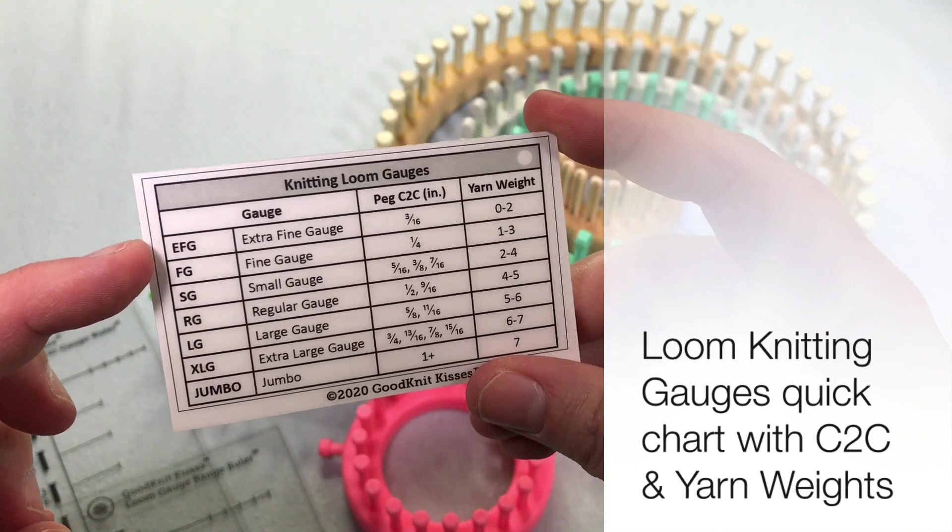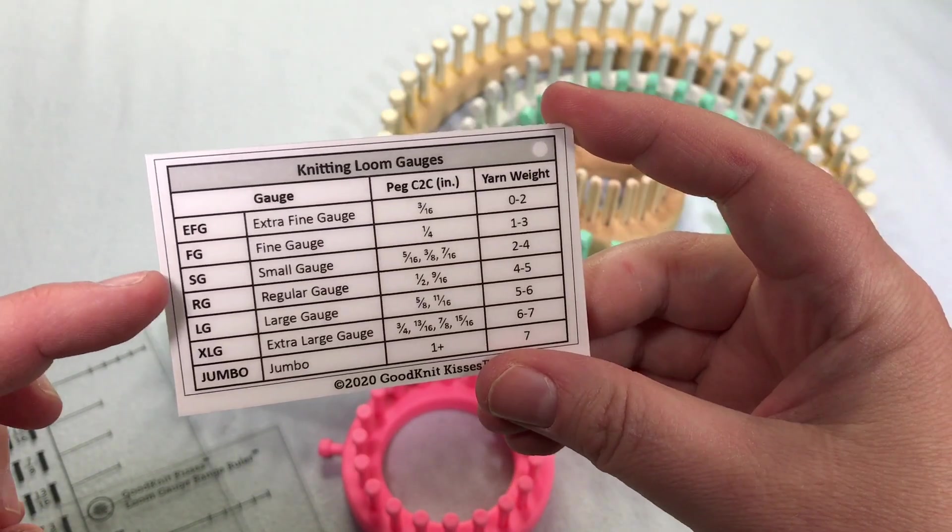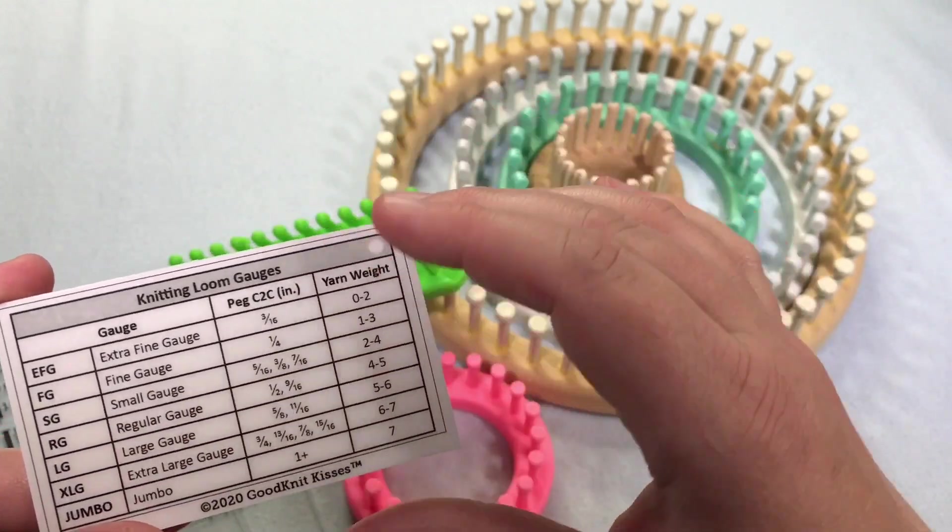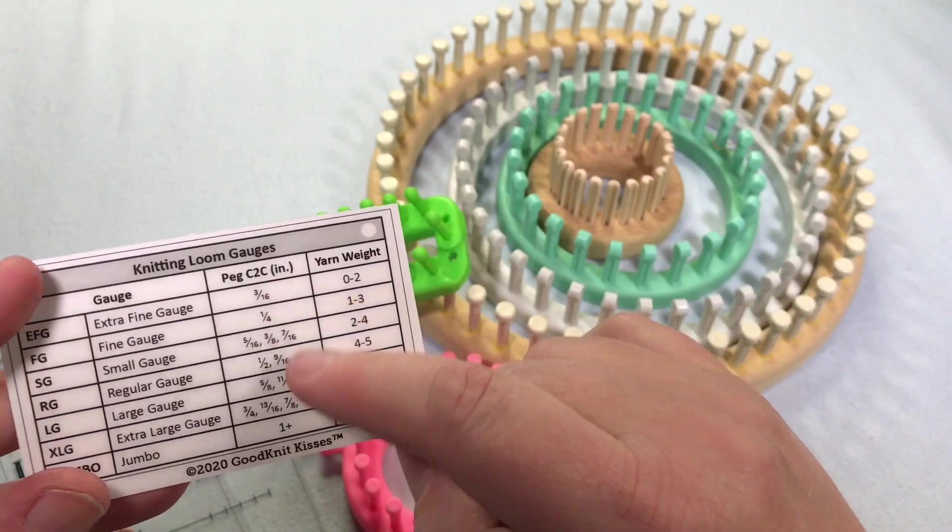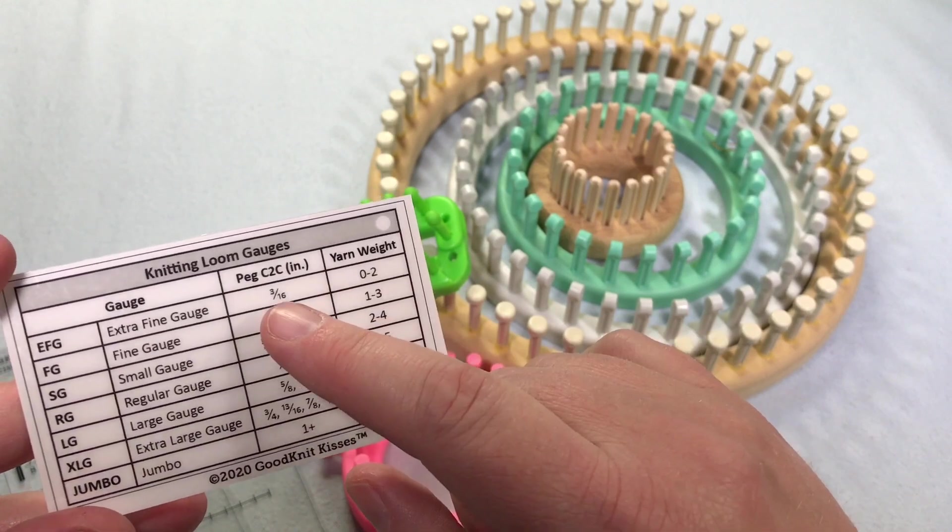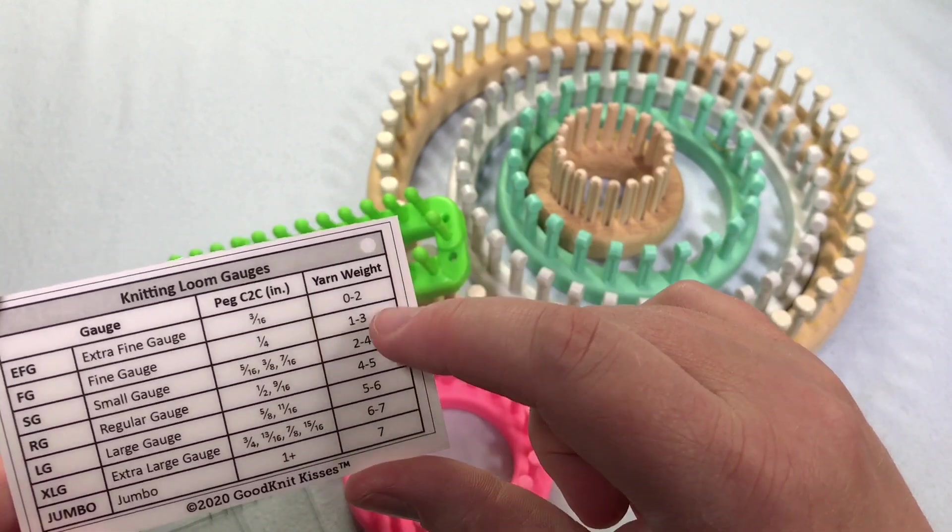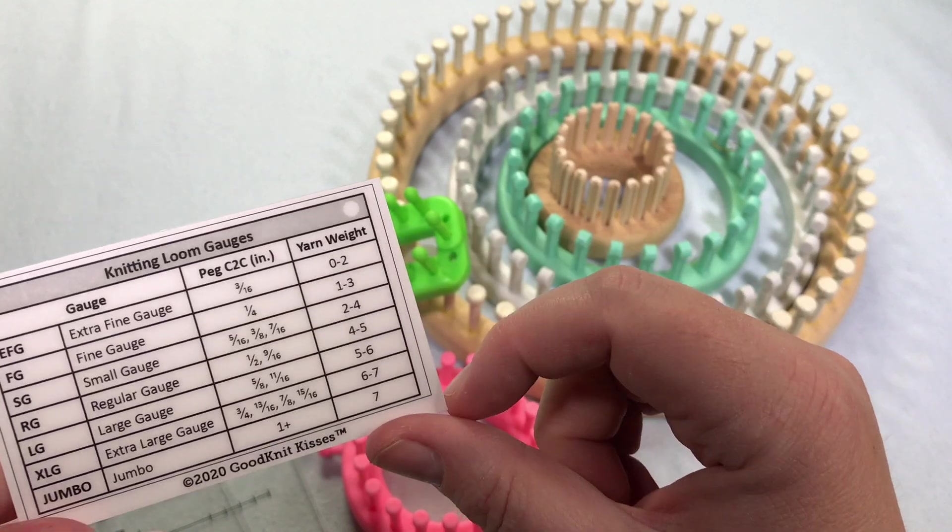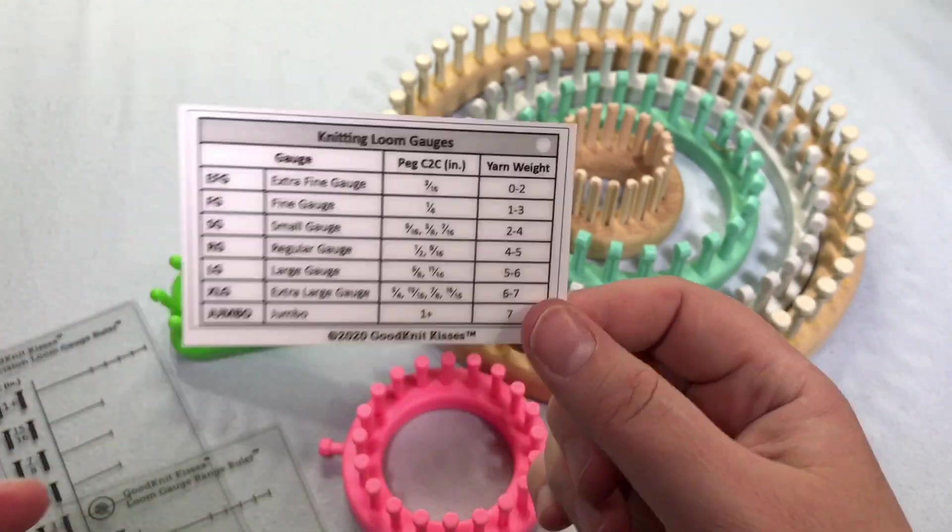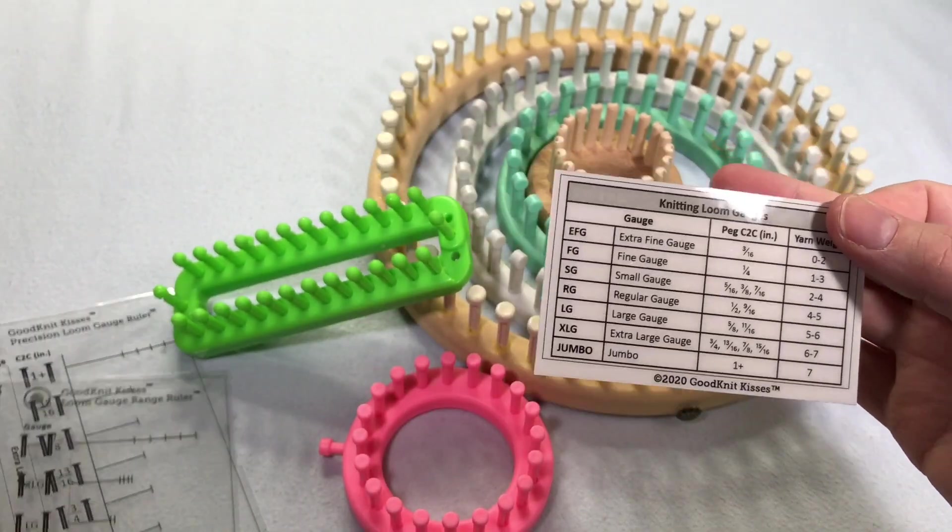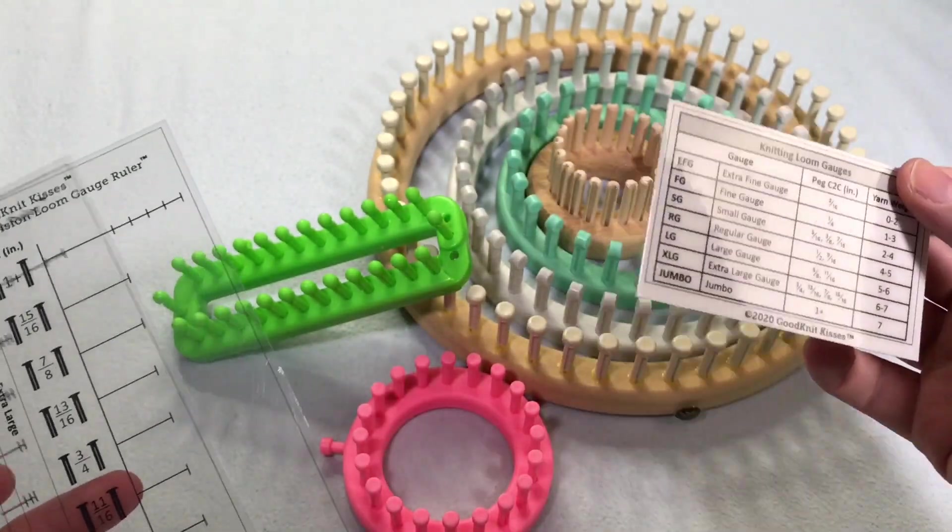We have extra fine gauge, EFG, fine gauge, small gauge, regular, large, extra large, and jumbo. And this little chart helps you because it tells you all the CDC spacings, the center peg to center peg measurement, and all the fractions involved in it. And this handy dandy chart tells you what weight is recommended on that loom. So it's really cool. You can hole punch it and put it on your key chain or whatever you wanna do, put it in your loom bag and go to town.